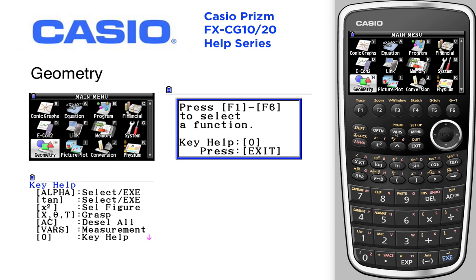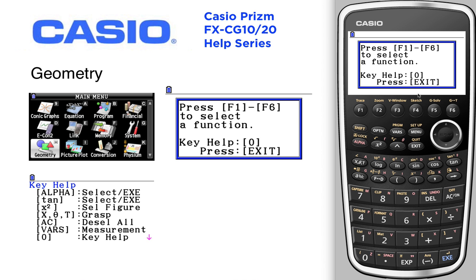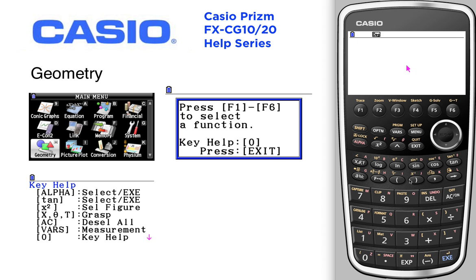Find the geometry icon, highlight it, and press execute to see what's going on here. It says press F1 through F6 to select functions, help key is 0, exit. So we'll exit.